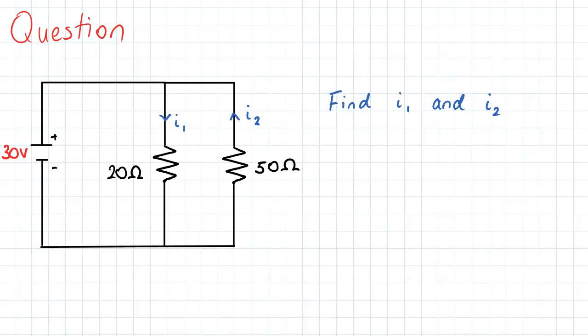So here is our question. We have a basic circuit configuration as seen over here. We have a power source supplying 30 volts to the system, and in our system we have two resistors—one of 20 ohms resistance and the other of 50 ohms resistance—in parallel.